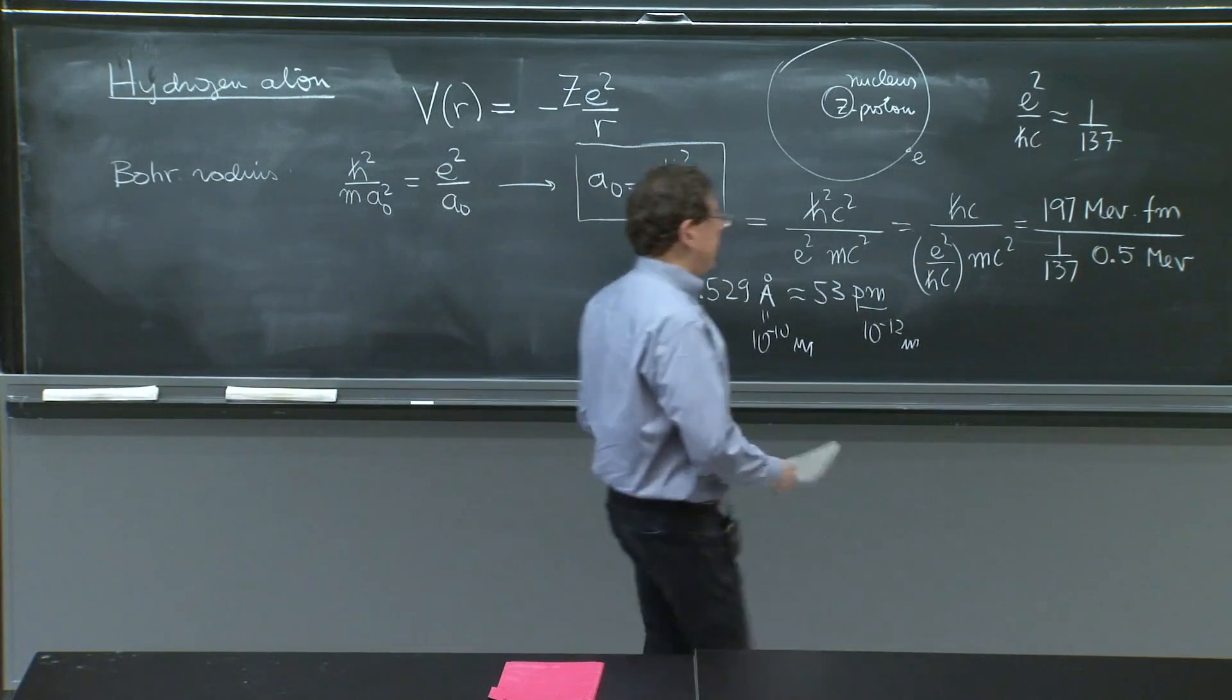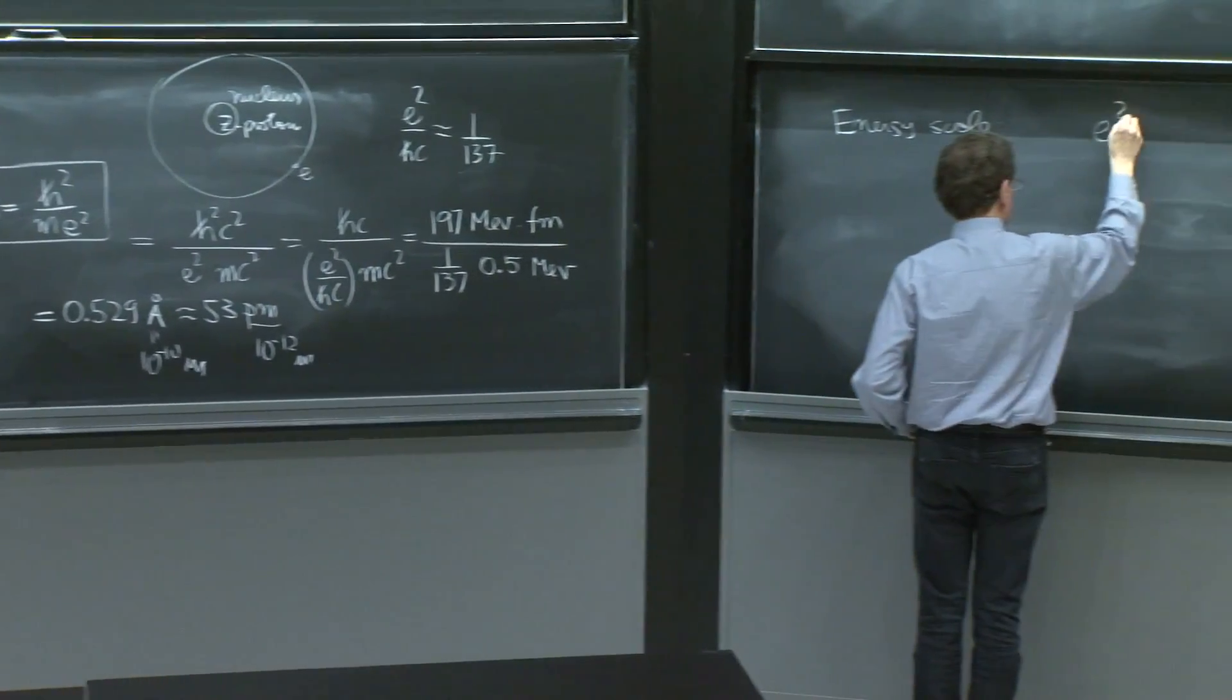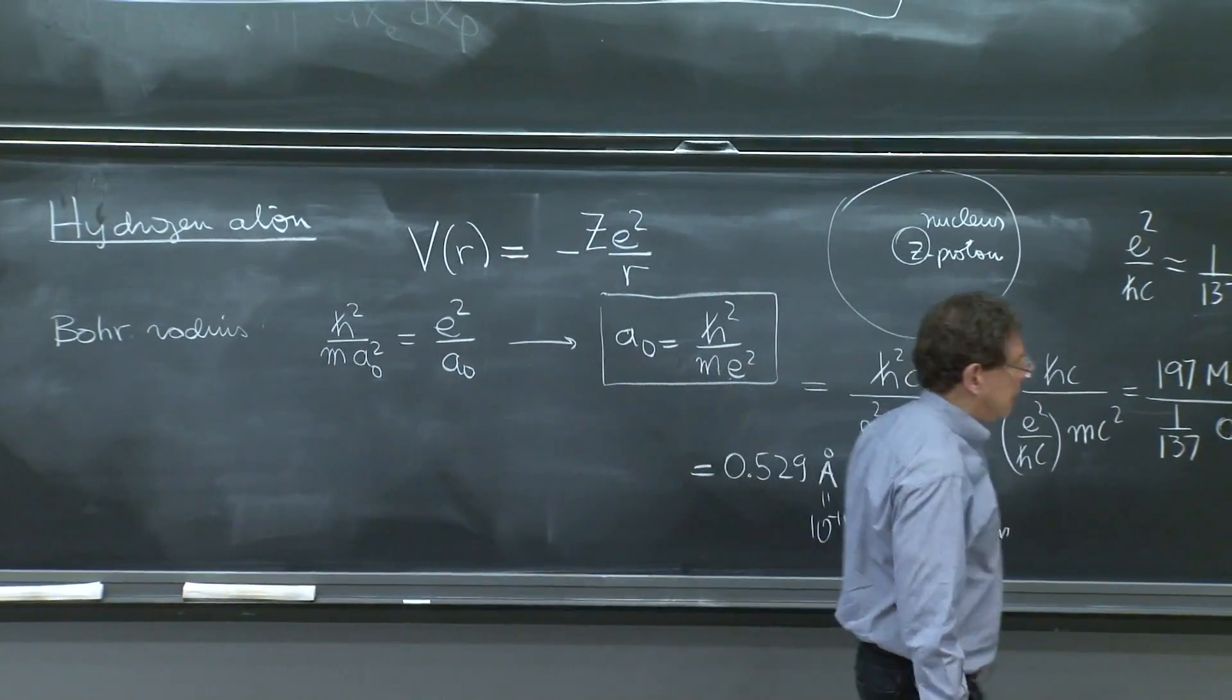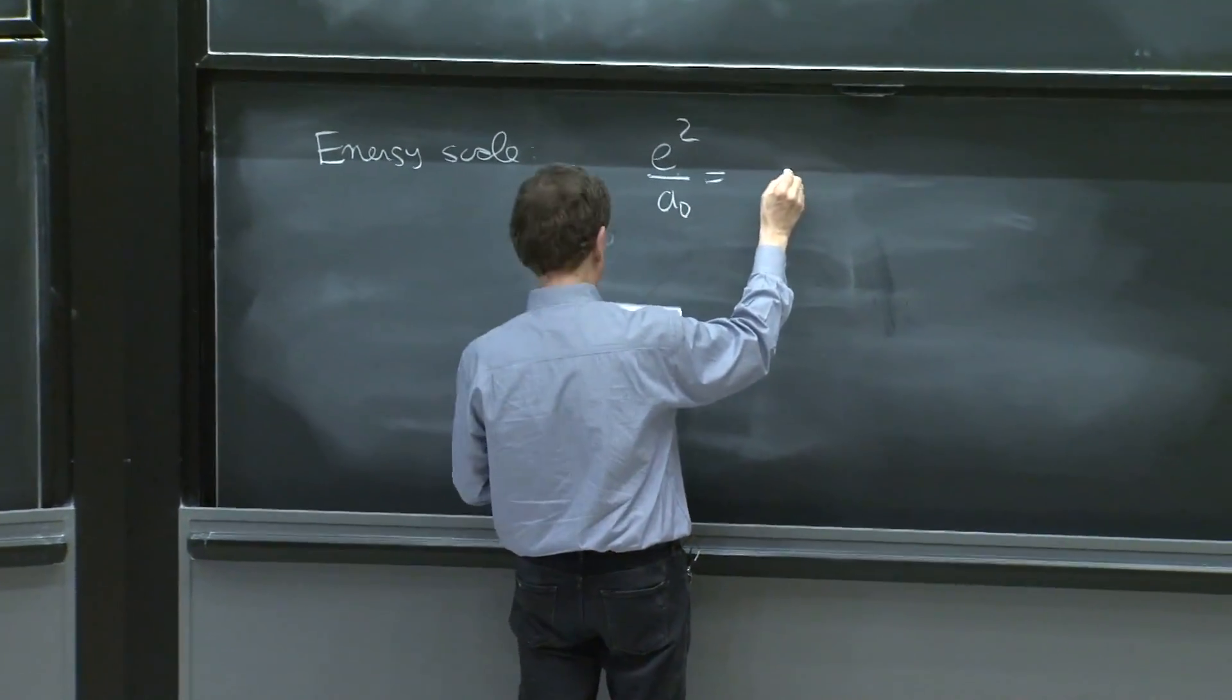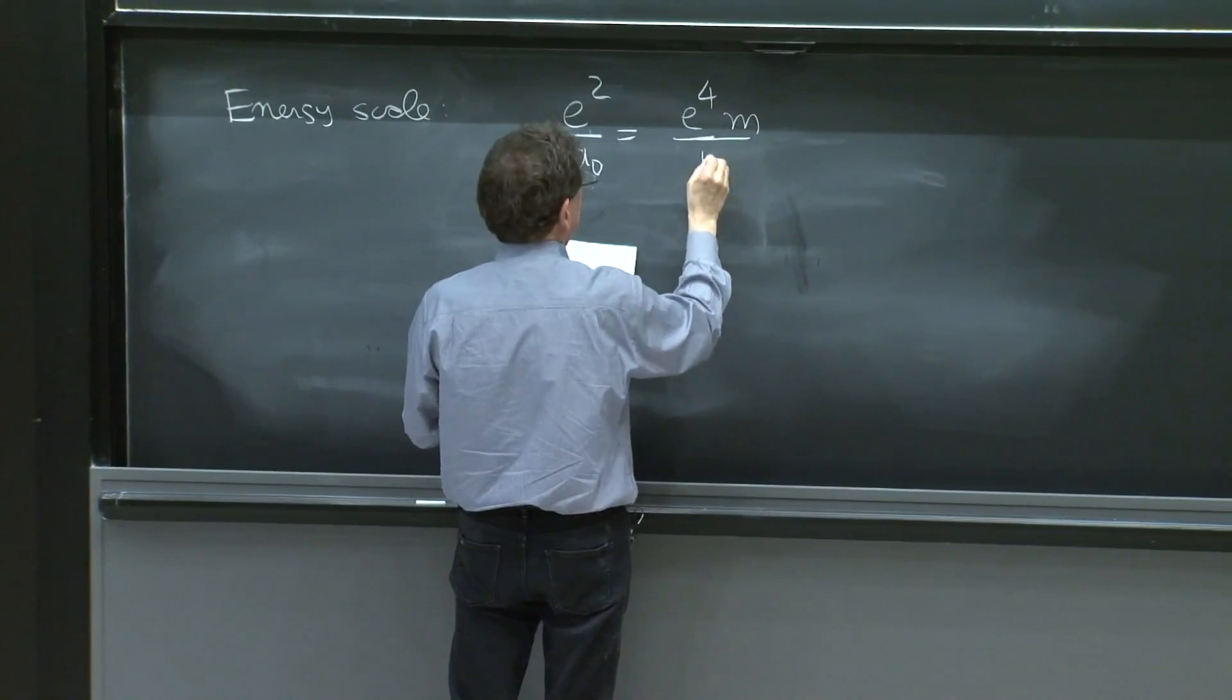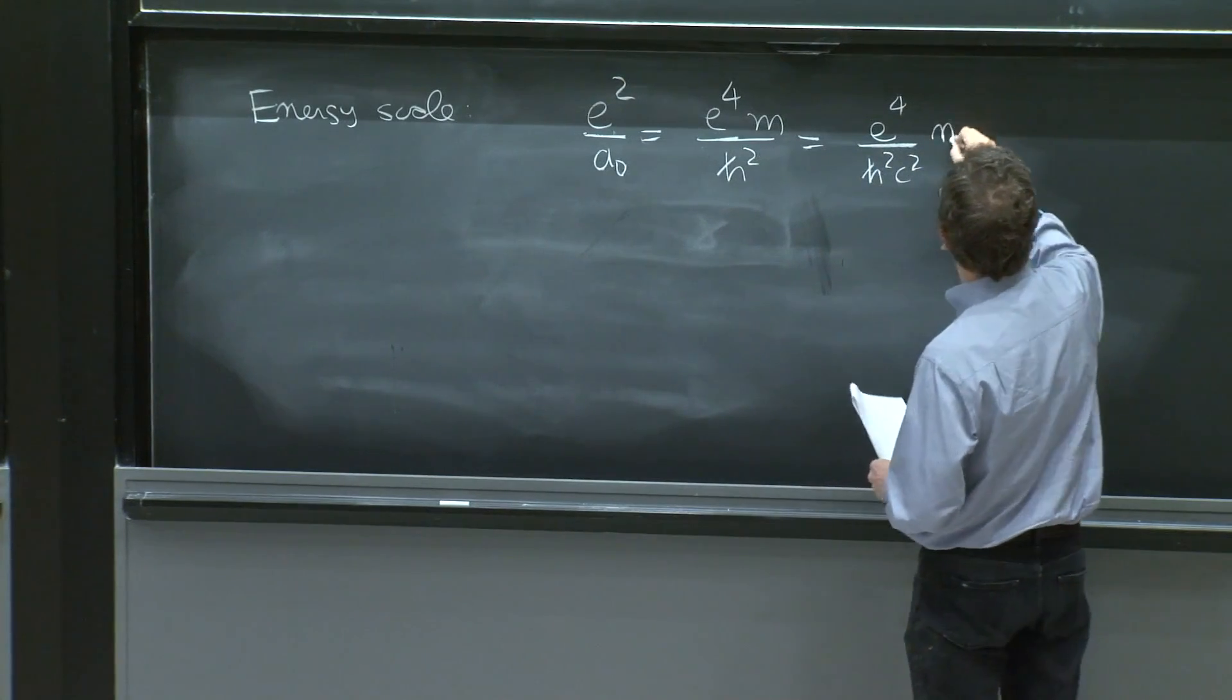There's an energy scale that is famous too. And that's e squared over a0. Because energy comes here, and the energy scale is e squared over a0. So you can substitute what a0 is, because you know it already, and you get e to the fourth m over h squared.